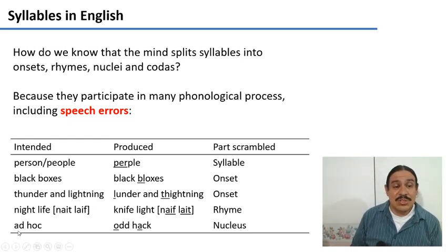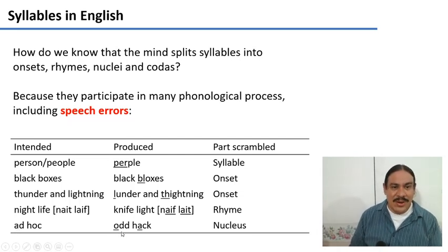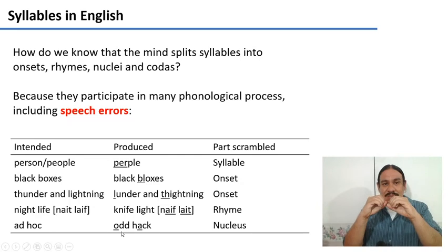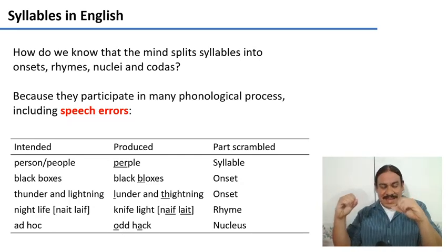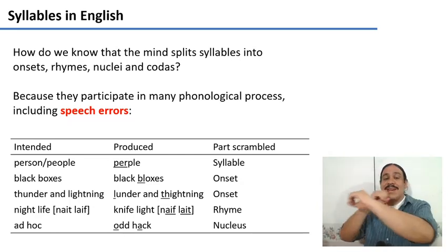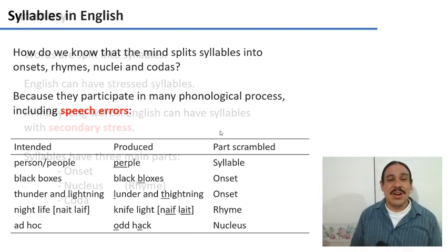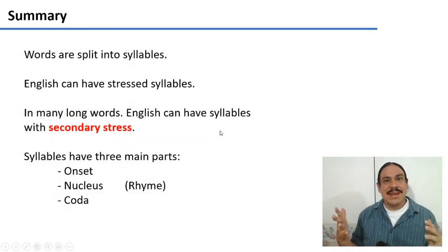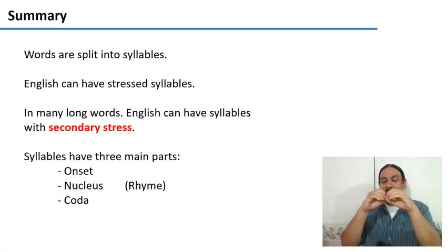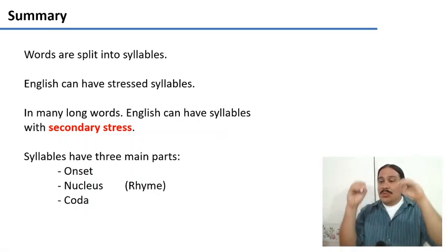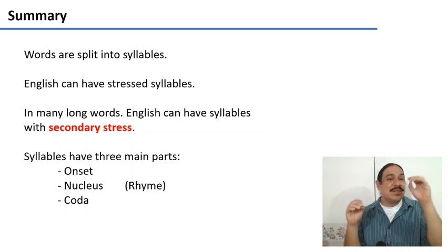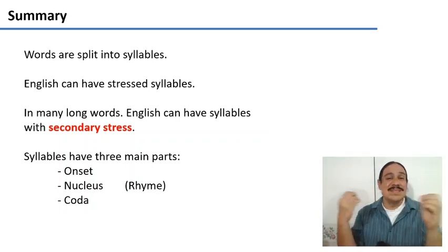Finally, you can just have a nucleus move around, going from ad hoc to odd hack, where the nucleus and the codas were separated, the codas stayed in place, and the nuclei switched around. So that's how we know that these objects actually exist in people's minds, because they appear to be separated and then people appear to be juggling them around. And this happens in speech errors.